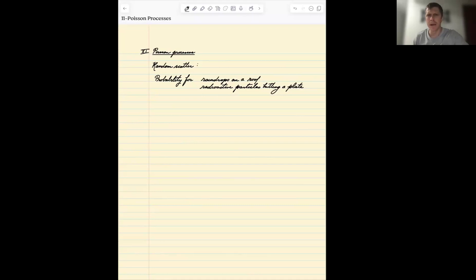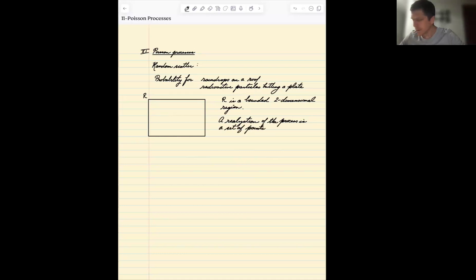We're going to let R be bounded. So what we're thinking about is we have some kind of region, a square region here. So R is a bounded two-dimensional region, and a realization of this process is a set of points, which we can call hits, in R.